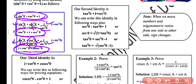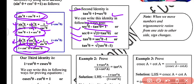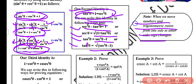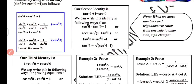Our second identity tan² θ plus 1 equals secant² θ can be written in multiple ways: secant² θ minus tan² θ equals 1; secant θ equals √(1 plus tan² θ); tan² θ equals secant² θ minus 1; and tan θ equals √(secant² θ minus 1). Note: when we move numbers or trig ratios from one side to the other, the sign changes, square becomes square root, and positive becomes negative. Keep this in mind.